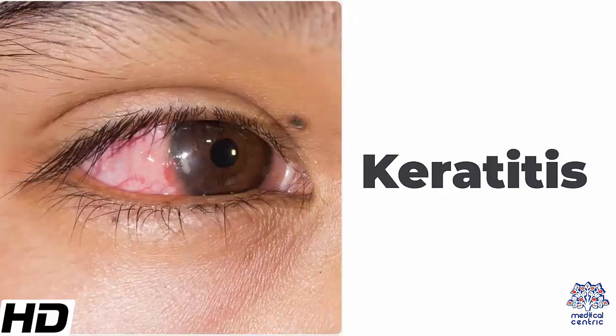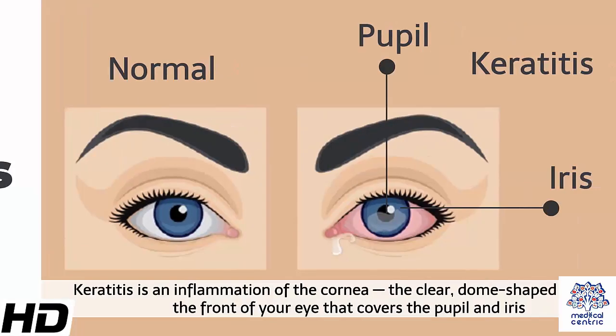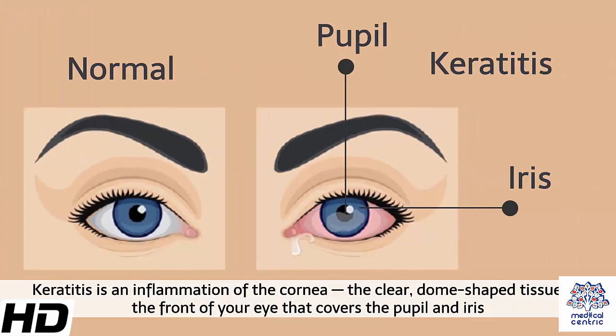Today's topic is keratitis. Keratitis is an inflammation of the cornea – the clear, dome-shaped tissue on the front of your eye that covers the pupil and iris.